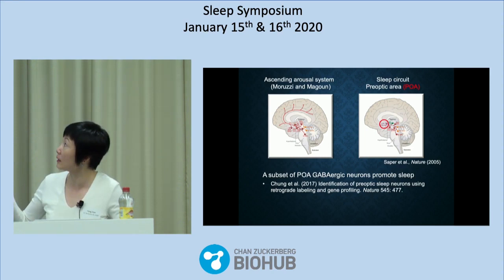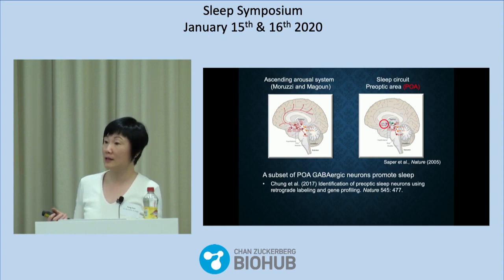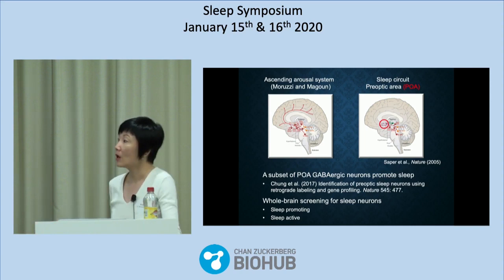But that's far from the whole picture. About four or five years ago, several groups including us found sleep neurons outside of the POA, suggesting that the mechanism is much more distributed. So to get an idea of what the entire control network might look like, we did a whole-brain screening for sleep neurons.